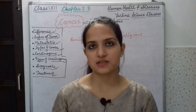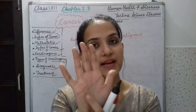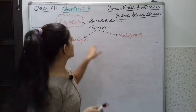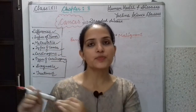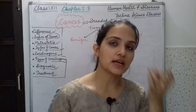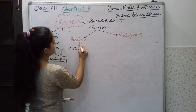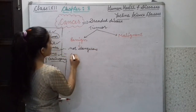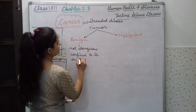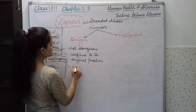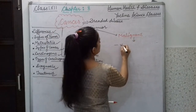A benign tumor is not dangerous. It doesn't cause any damage. For example, like a mole on my right palm — that is a benign tumor. It does not spread from one place to another and doesn't cause any harm. So benign tumors are not dangerous; they are confined to their original position and do not spread.